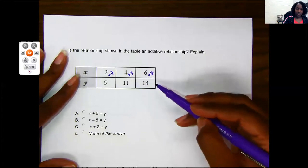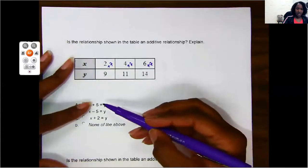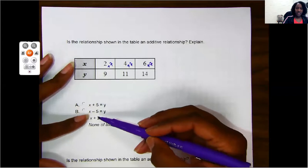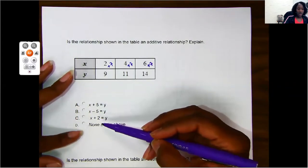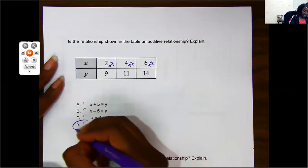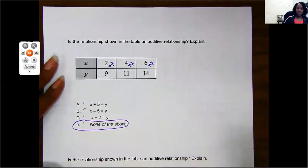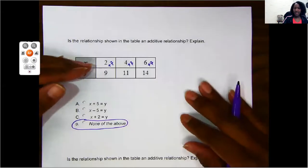And if we look down here at our answer choices, I don't see one that tells me that I'm adding 7 to it. So my option here would have been D, none of the above match what's happening in this table, okay? Alright, let's do one more.